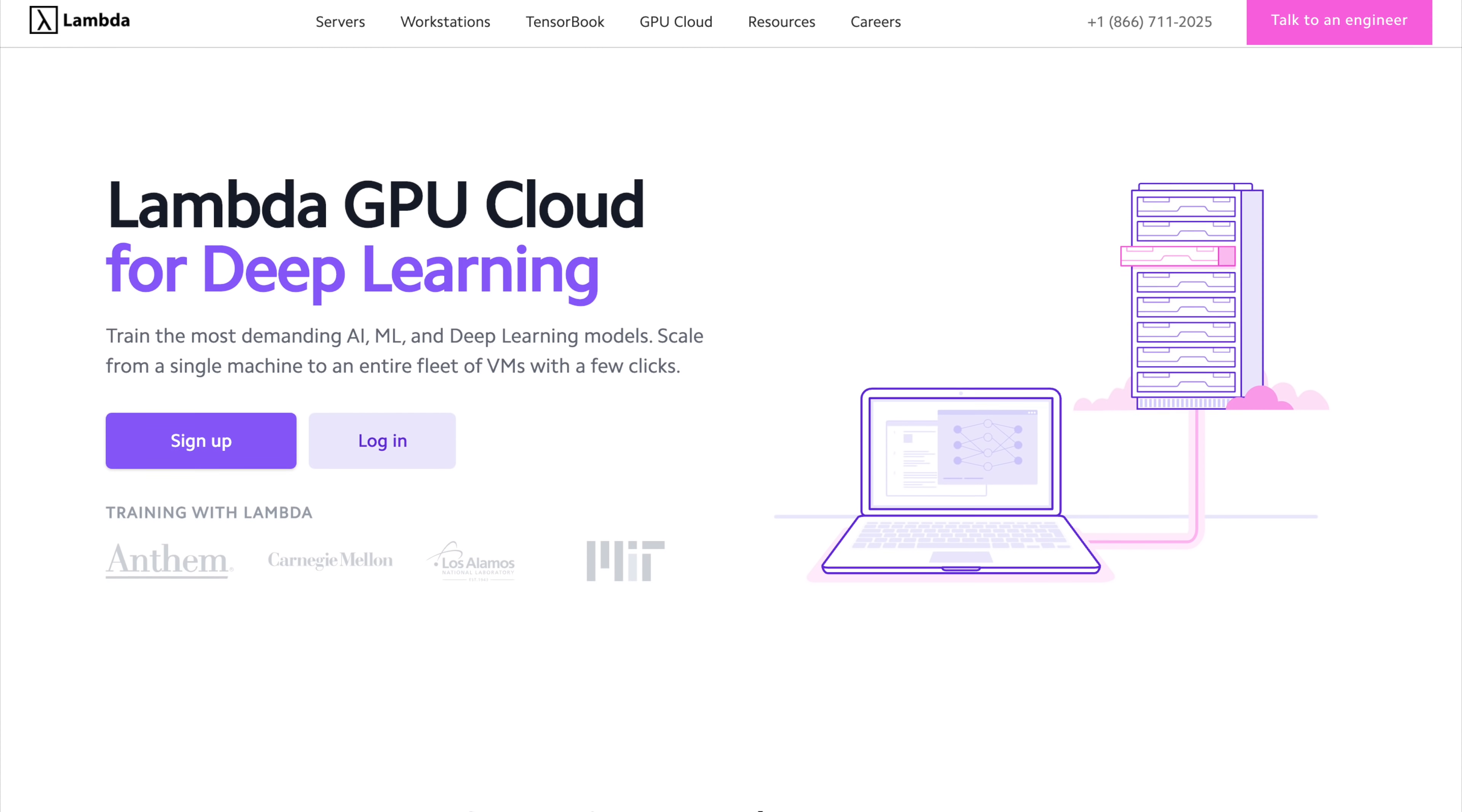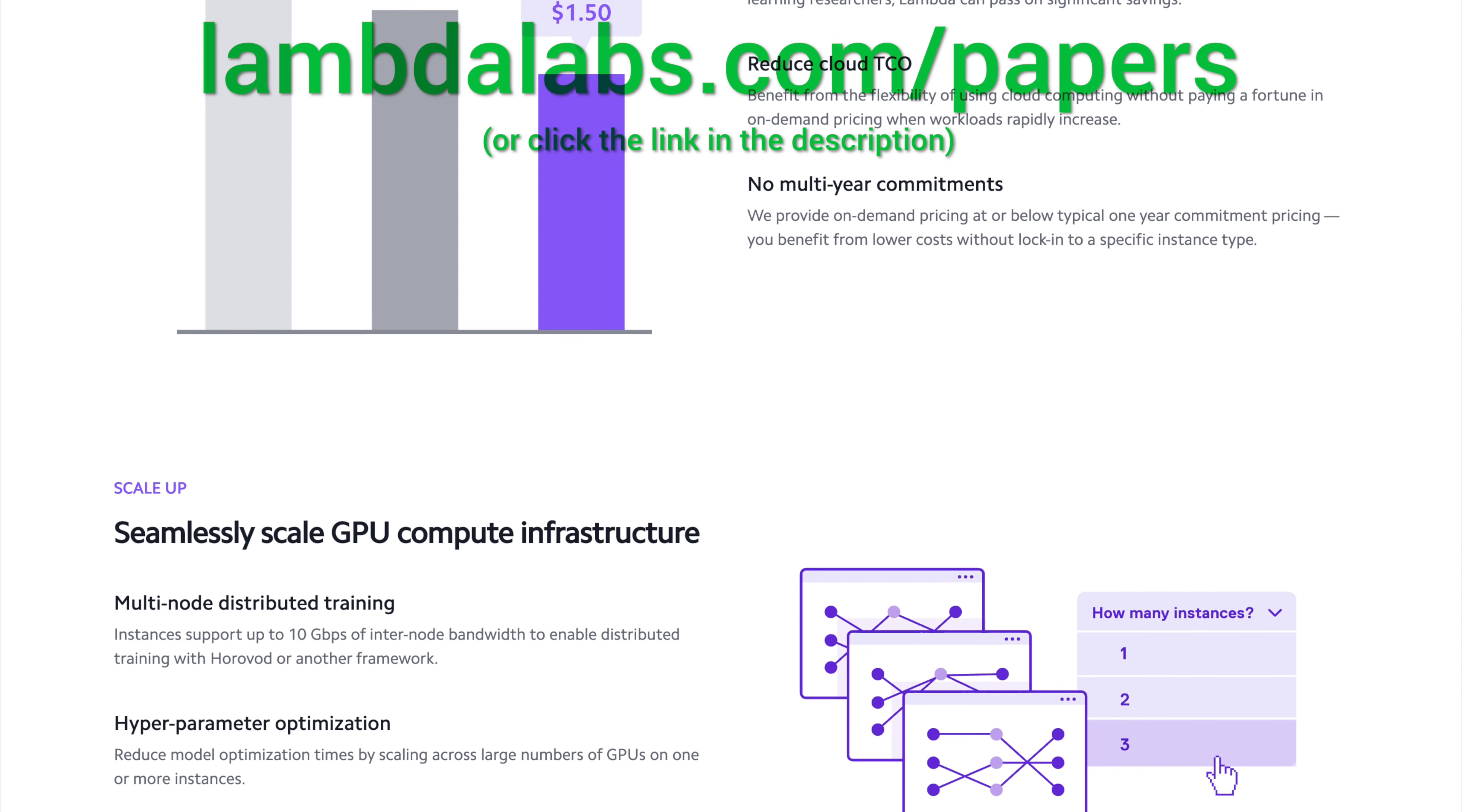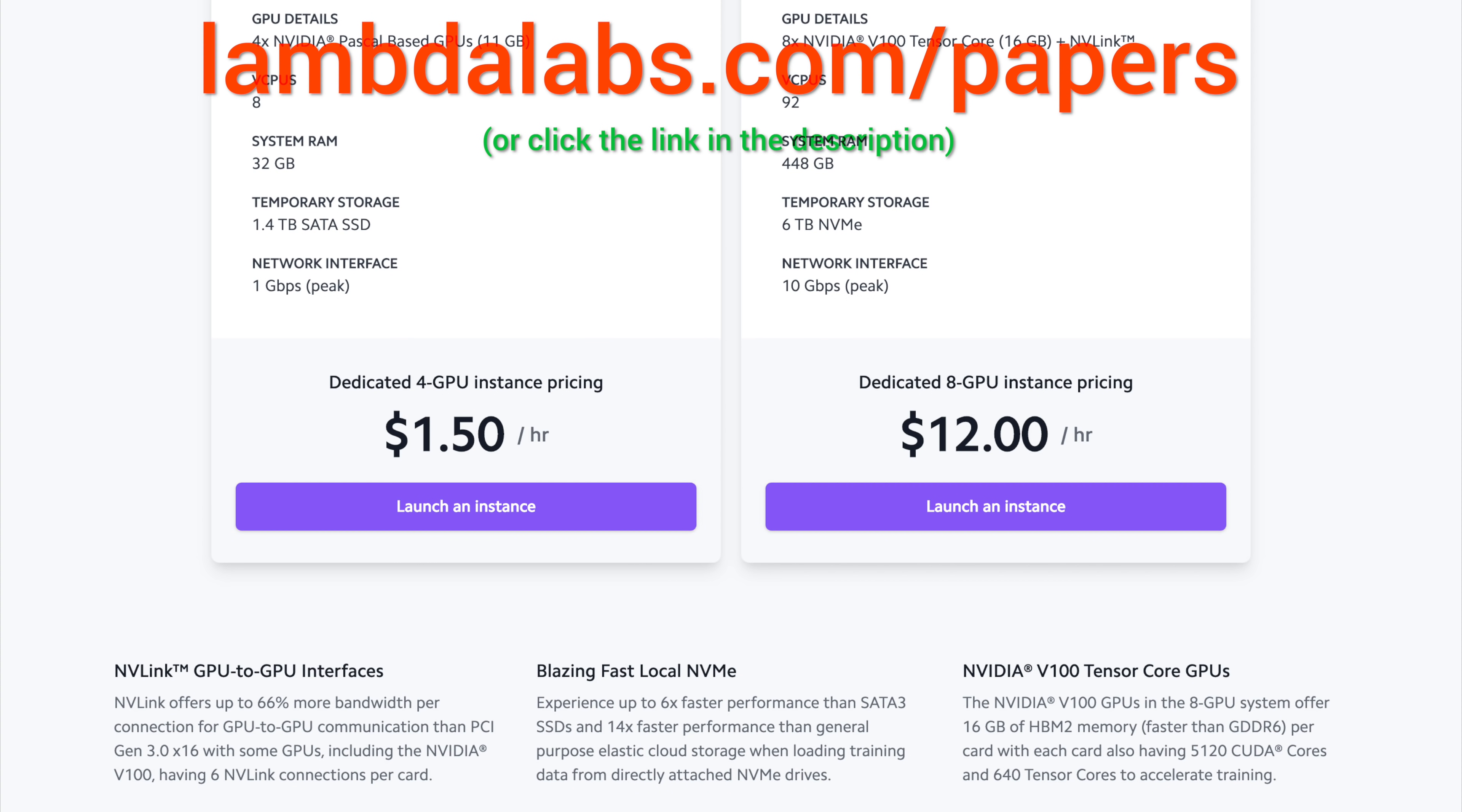This episode has been supported by Lambda GPU Cloud. If you're looking for inexpensive cloud GPUs for AI, check out Lambda GPU Cloud. They've recently launched Quadro RTX 6000, RTX 8000, and V100 instances, and hold on to your papers because Lambda GPU Cloud can cost less than half of AWS and Azure. Plus, they are the only cloud service with 48 Gigabyte RTX 8000. Join researchers at organizations like Apple, MIT, and Caltech in using Lambda Cloud instances, workstations, or servers. Make sure to go to lambdalabs.com/papers to sign up for one of their amazing GPU instances today. Our thanks to Lambda for their longstanding support and for helping us make better videos for you. Thanks for watching and for your generous support, and I'll see you next time!